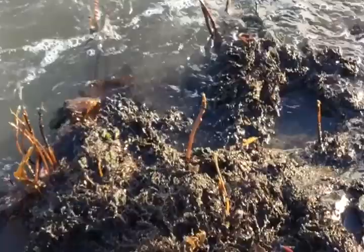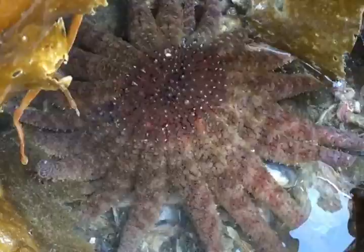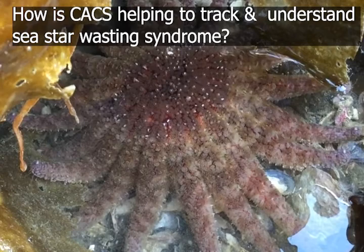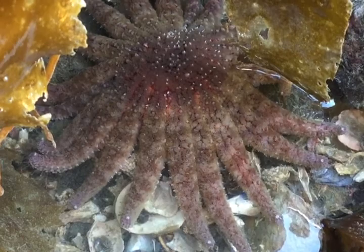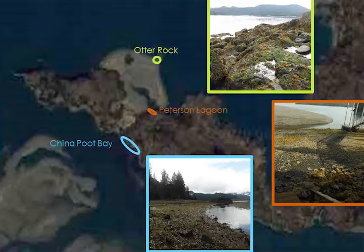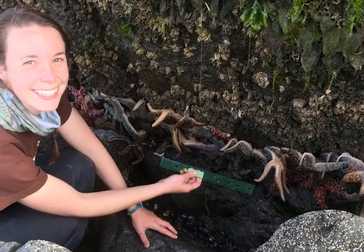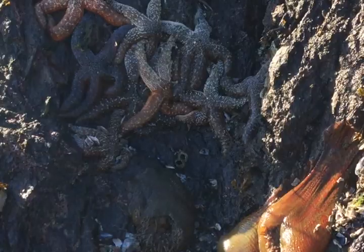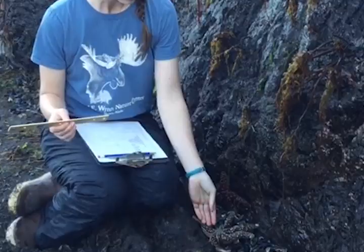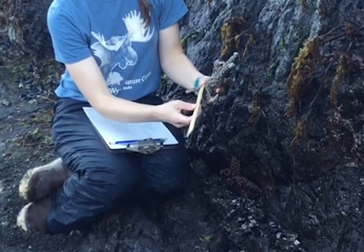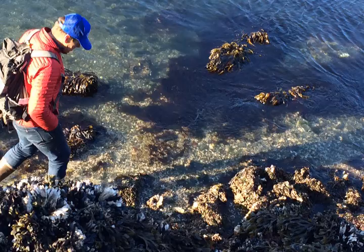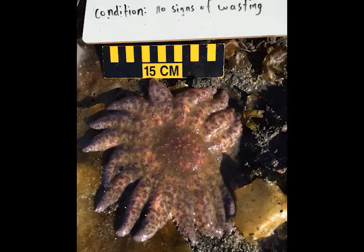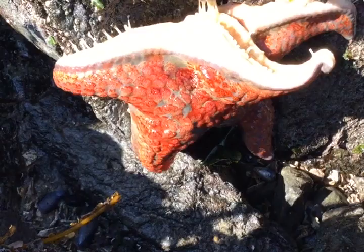The Center for Alaskan Coastal Studies has been doing work to track and understand sea star wasting syndrome here. Since 2014, we've been collecting data on sea stars in three permanent plot locations around our Peterson Bay field station. Because sea star wasting syndrome happened farther south first, we were able to begin collecting data before the big die-off event, so we've been able to track the change over time. We go out every spring, summer, fall, and winter to count, measure, and look for signs of wasting in all the true stars and ochre stars within the permanent plot area, and we also do a subtidal count walking along the water's edge looking for sunflower stars, leather stars, and other less common stars.